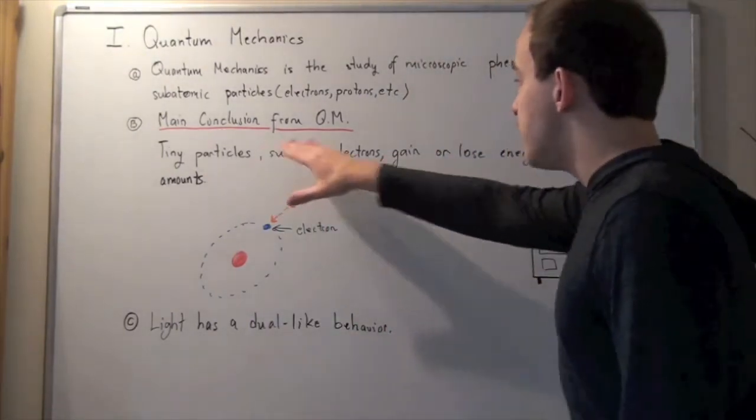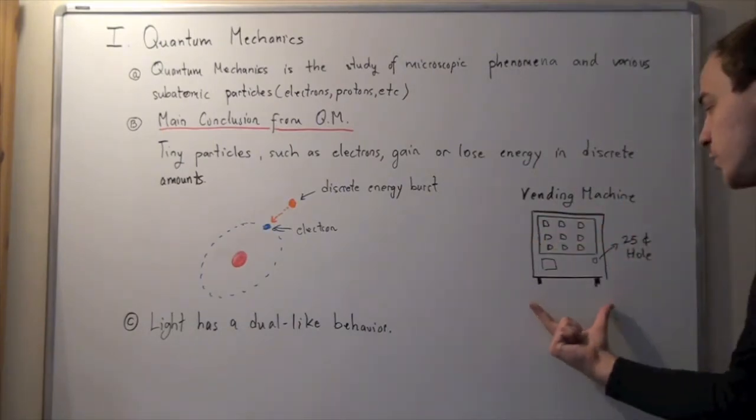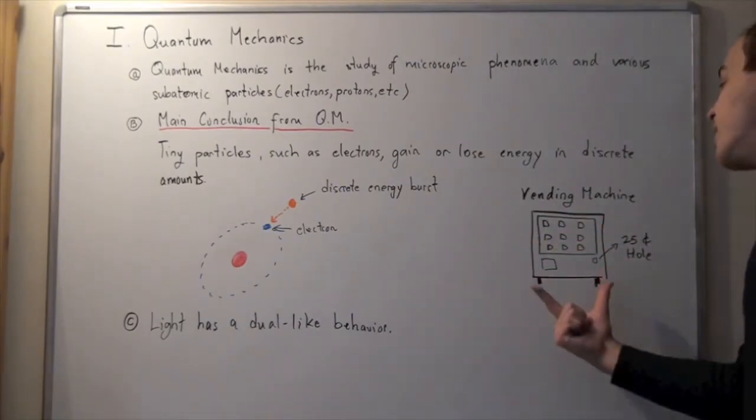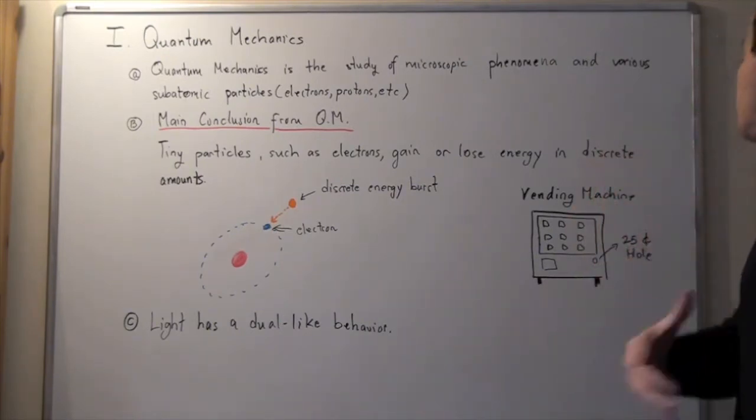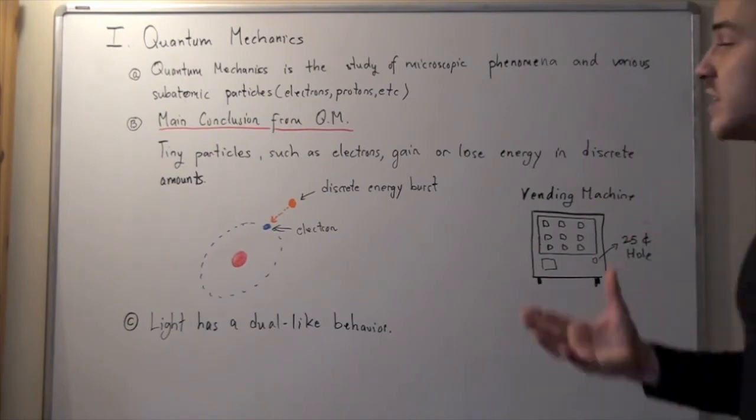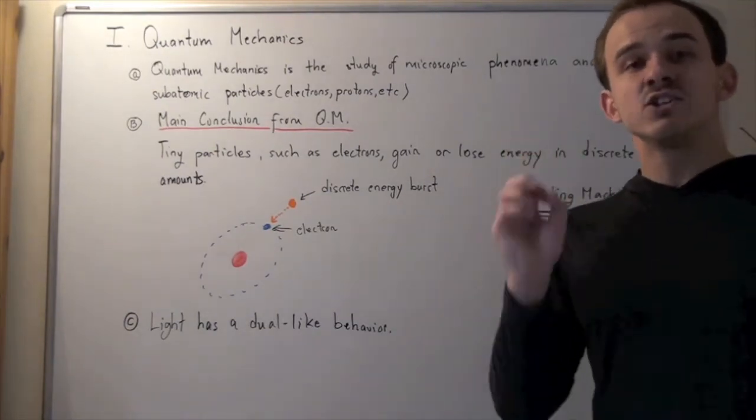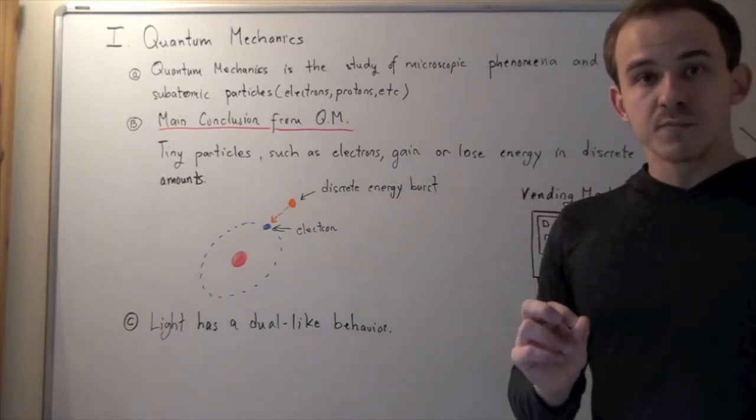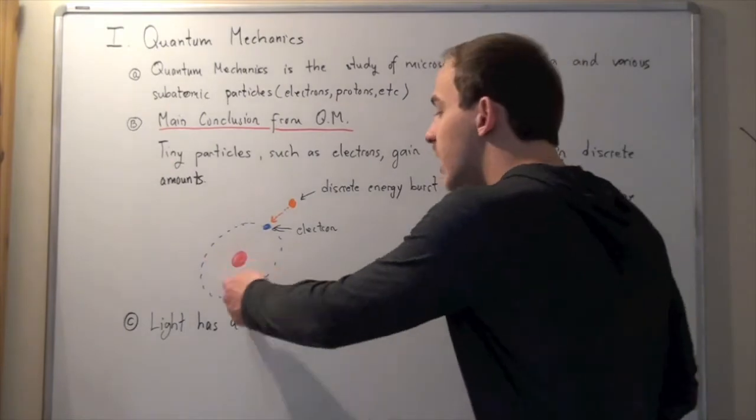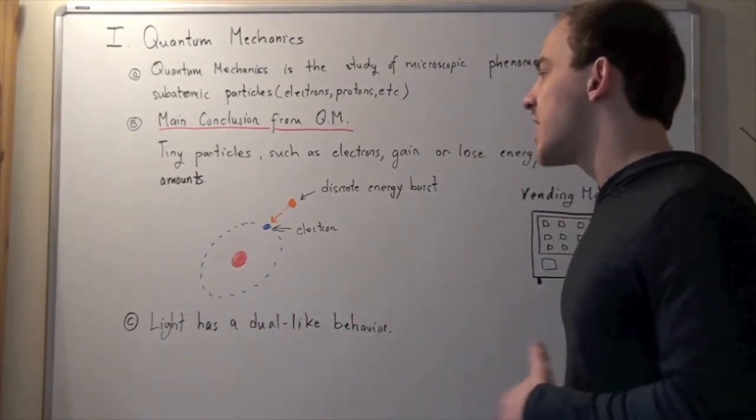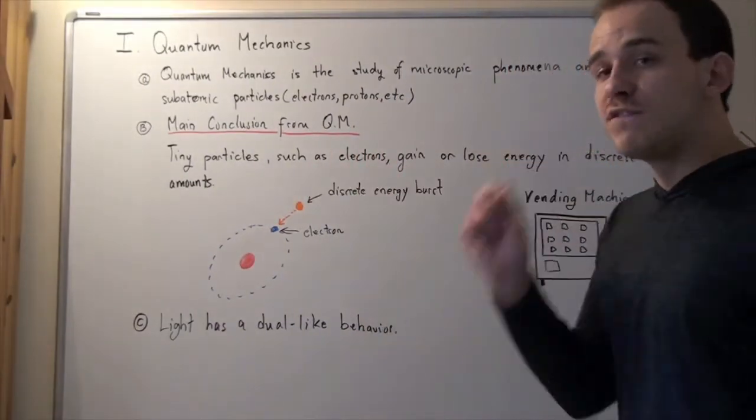Now this statement is analogous to the following everyday situation. Suppose we have a vending machine and this vending machine only accepts coins that are 25 cents. So it won't accept 2 cent coins, it won't accept 5 cent coins, it won't accept dollar bills, it only accepts a single coin known as the quarter. Now in the same analogous way, electrons and protons and neutrons and other subatomic particles accept energy bursts from a discrete amount called a photon.